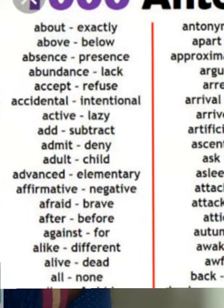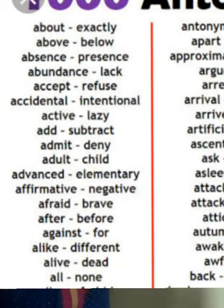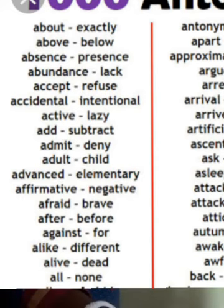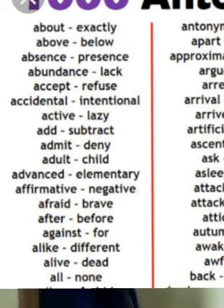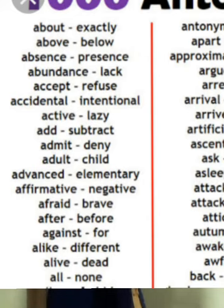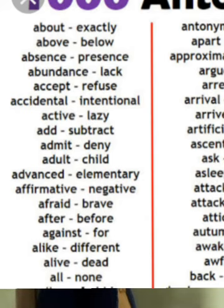Now let us read some antonym words. Antonym means the opposite words. The first one is about — the answer would be exactly. These are the opposite words we are reading; keep it in mind these are not synonym words. Antonym words means the opposite words. About — exactly. Above — below. Absence — presence. Accept — refuse.